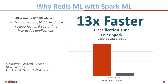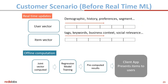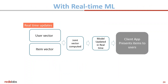Think of the actual customer recommendation scenario where you have a user vector including demographics, history, preferences, and segment, as well as an item vector including tags, keywords, business context, and social relevance. Offline, you'd typically compute a joint vector, train a regression model, pre-compute results, and use them in the client application. With Redis ML and real-time machine learning, the user vector and item vector are updated in real-time and the model is updated in real-time as the client application presents items to users — fueling machine learning at a much faster rate.